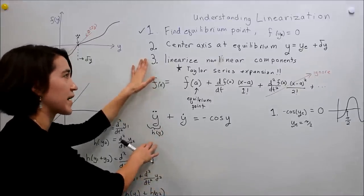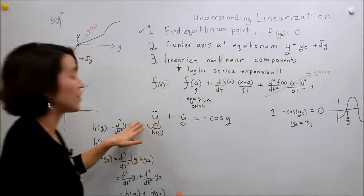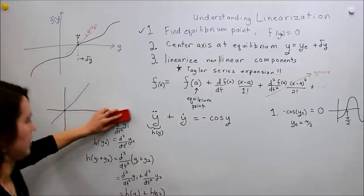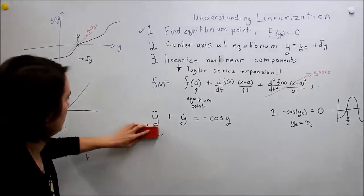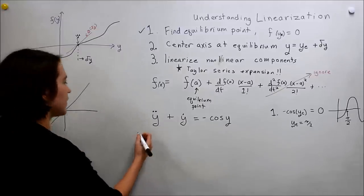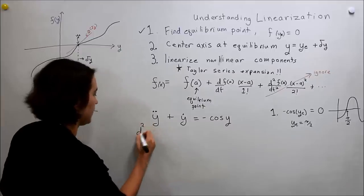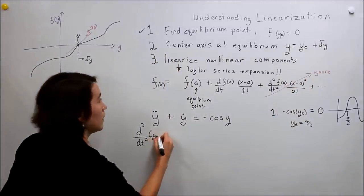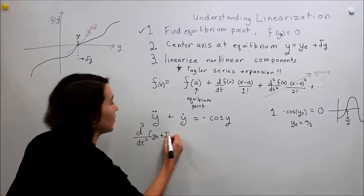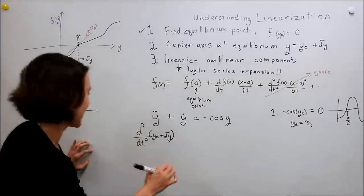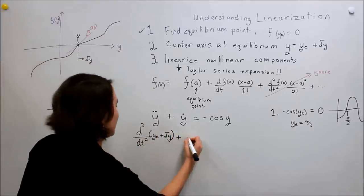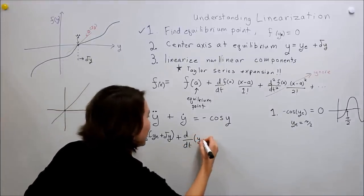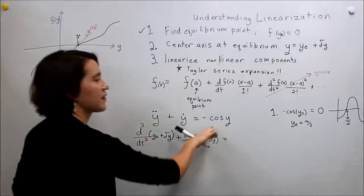All we have to do on the left side is apply the variable substitution — moving the axis. The left side will already be linear. We substitute y = y_e + δy, so the double derivative of (y_e + δy). Since y_e is a constant, its double derivative is zero, leaving just δ̈y. The same happens for the first derivative term: ẏ_e = 0, leaving just δ̇y.